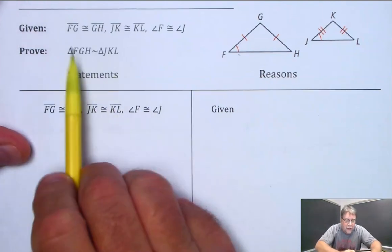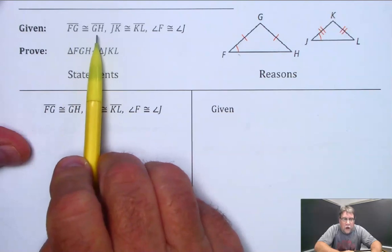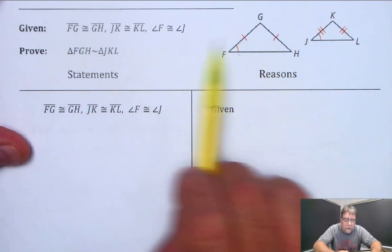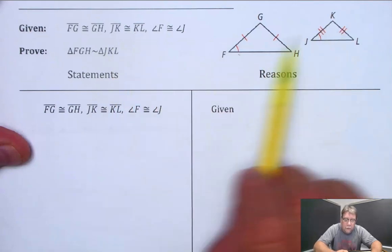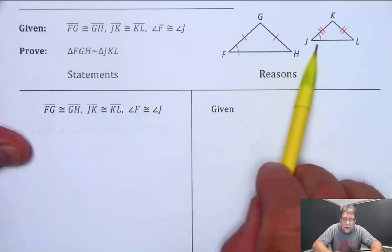We know that FG and GH are congruent, right here, marked congruent. We know that JK and KL are marked congruent. We know that angle F and angle J are congruent.